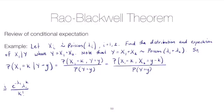And then the PMF for x2 equal to y minus k. So we're multiplying by e to the negative lambda two times lambda two to the y minus k over y minus k factorial.